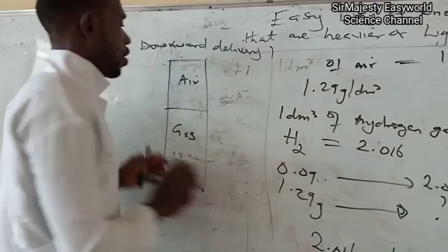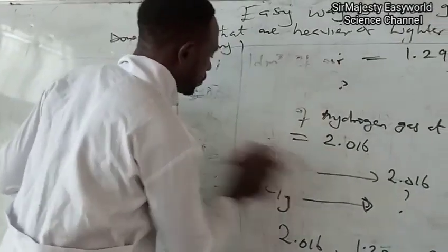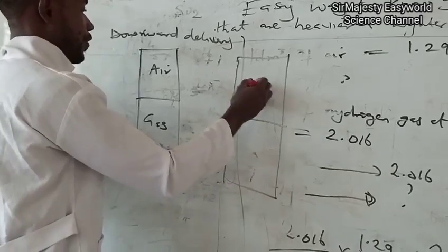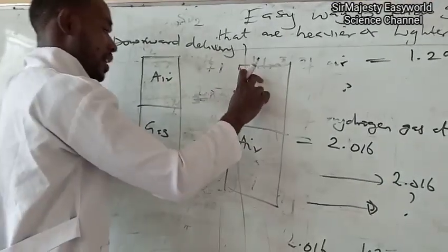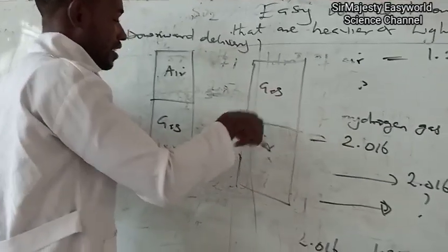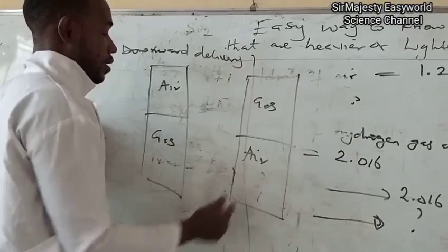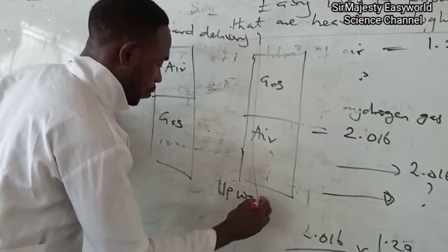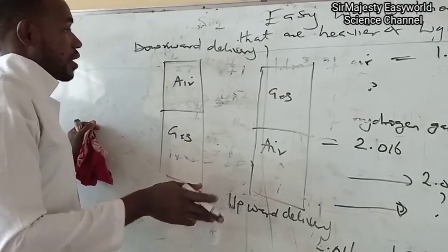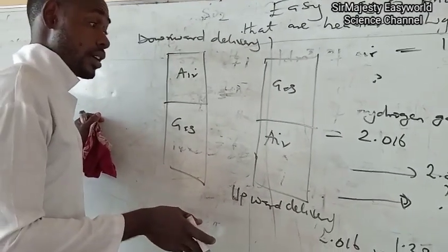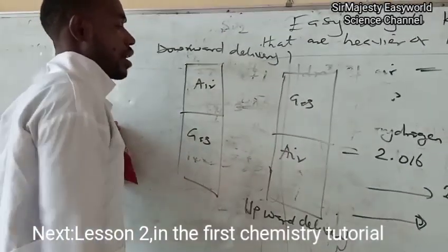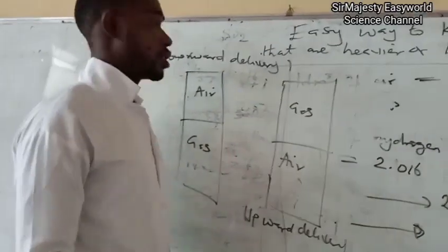Then the alternative is on the contrary. If you have gas up and air down, what does it show? Now, gas is lighter than air here. Because you don't carry what is heavier than you. Rather, what is heavier than you will carry you. So, this one is called downward displacement of air. And it's the same thing as upward delivery. So, if they ask you the method of collection of chlorine gas, is it heavier than air or lighter than air? It should be collected by downward delivery and upward displacement of air. Then, ammonia should be collected by upward delivery and downward displacement of air.